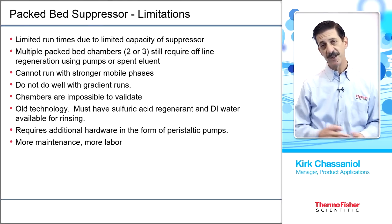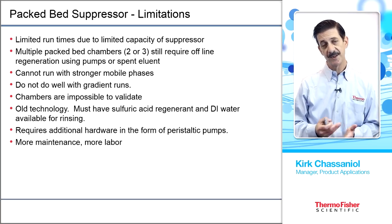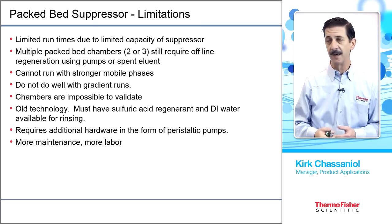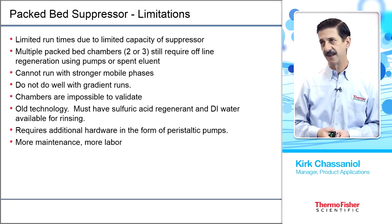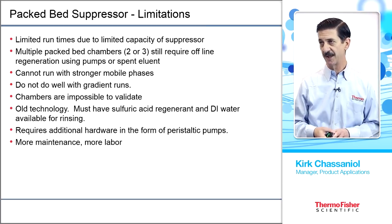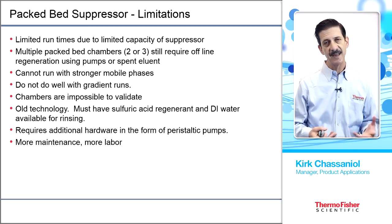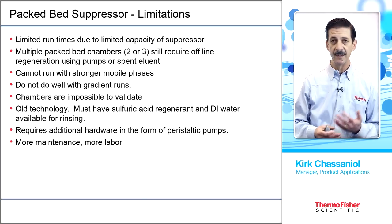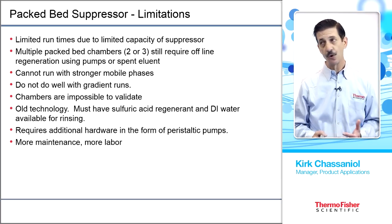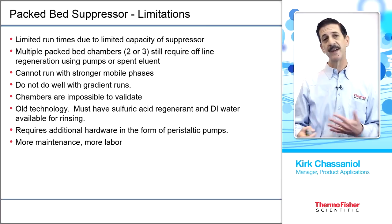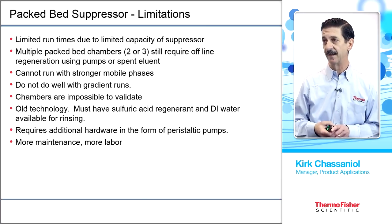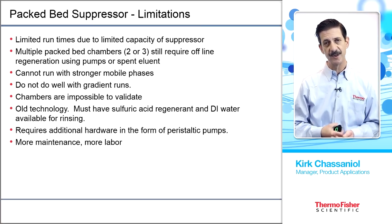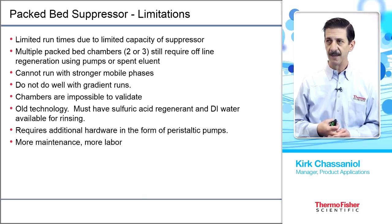The first suppressors were columns packed with cation exchange resin, and improvements exist today, but there is still a finite capacity limiting run times before the suppressor could be exhausted. With multiple chambers, reproducibility differences can occur, and old packed-bed suppressors require sulfuric acid for regeneration. Continuous suppression is essentially maintenance free, allowing stronger eluents for separation and column cleaning without those drawbacks.